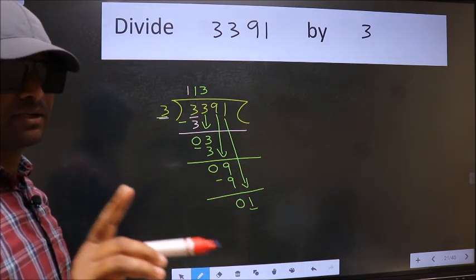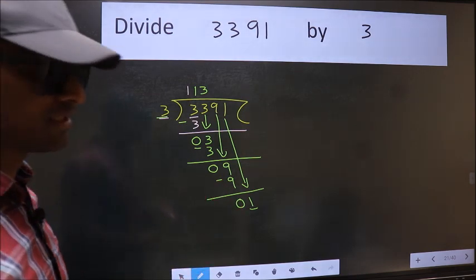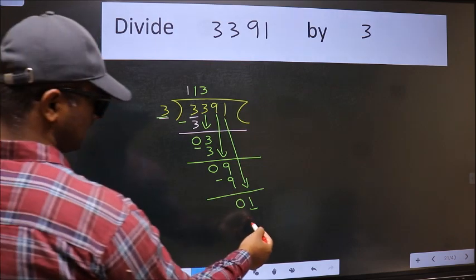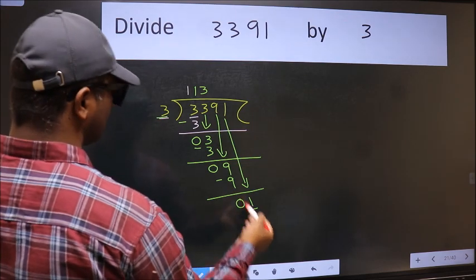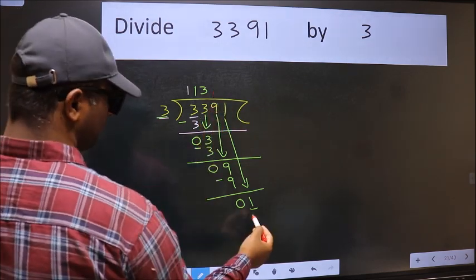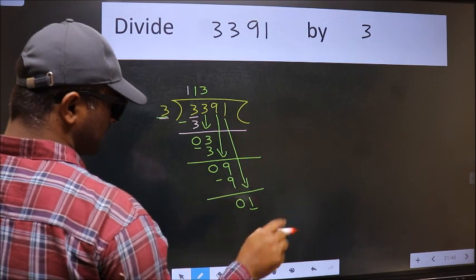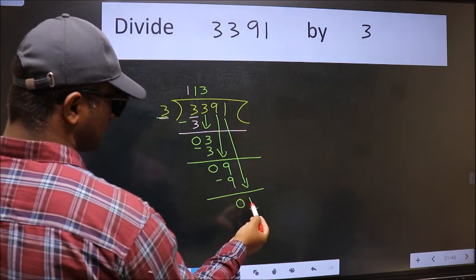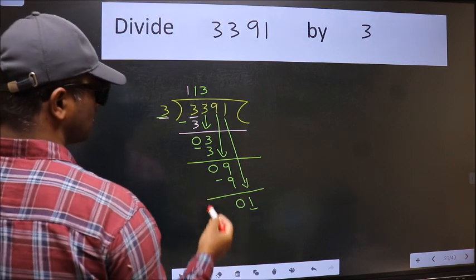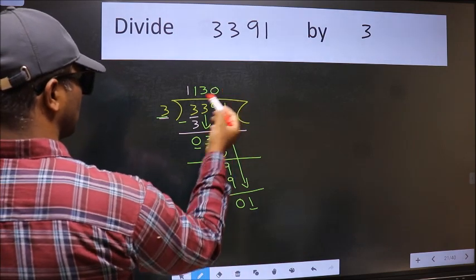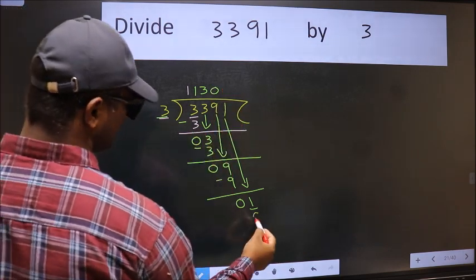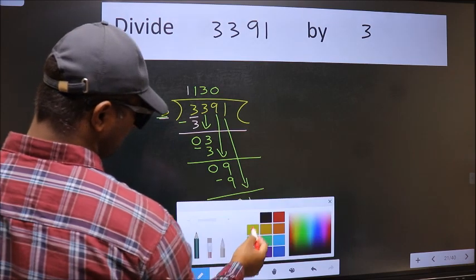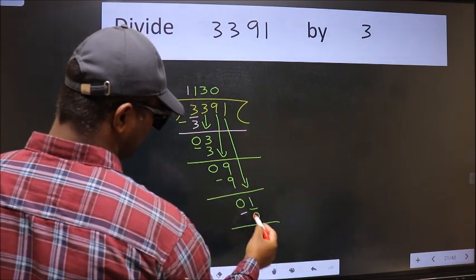Instead of that, what you should think of doing is: Which number should we take here? If I take 1, we will get 3. But 3 is larger than 1. So what we should do is we should take 0. So 3 into 0, 0. Now we should subtract. We get 1.